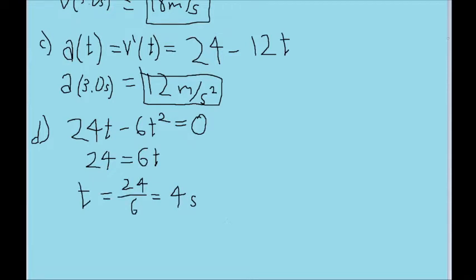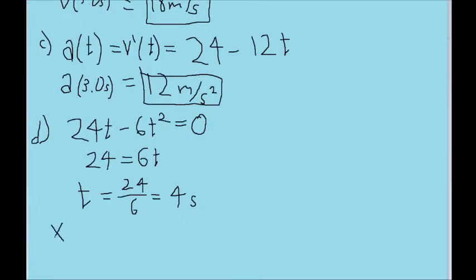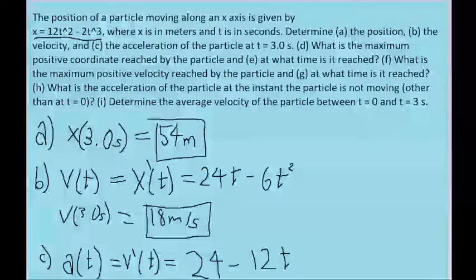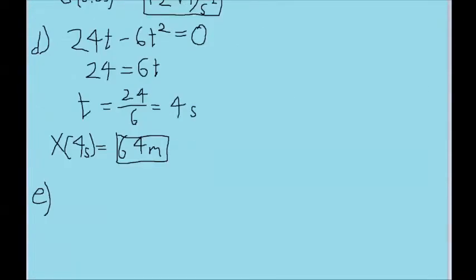So now that we know the time at which the particle is at its maximum position, we can put this time into our t variable for x to find out what that position actually is. If we take our position function and put 4 into it, 4 seconds to be exact, and you put this into your calculator, you should find that the position at this point is around 64 meters. Part E asks about the time at which this is reached, but we already found that. It was one of the preliminary steps for part D. We already know that it reaches the maximum point at 4 seconds, so 4 seconds is our answer.